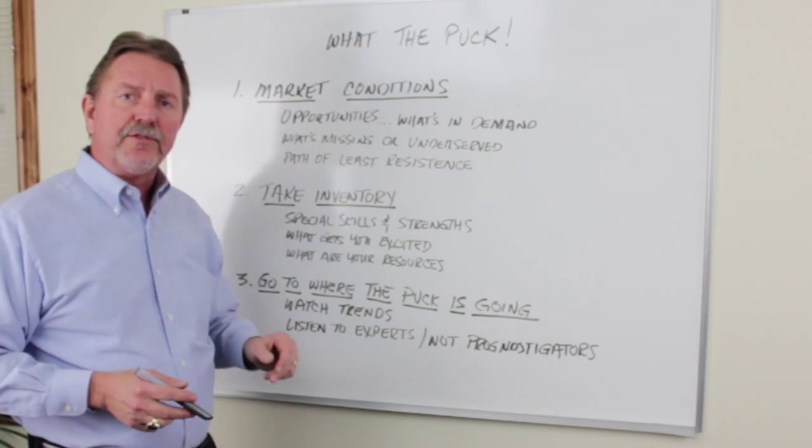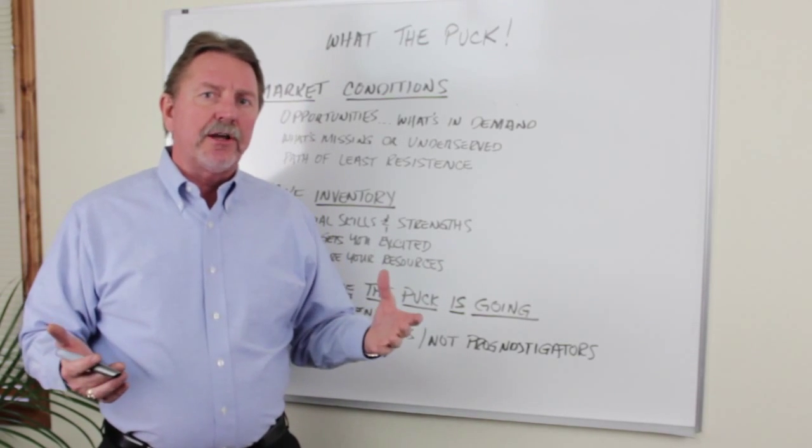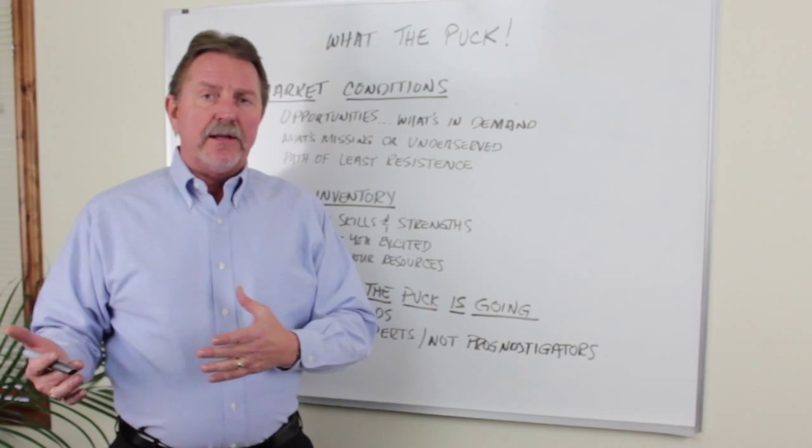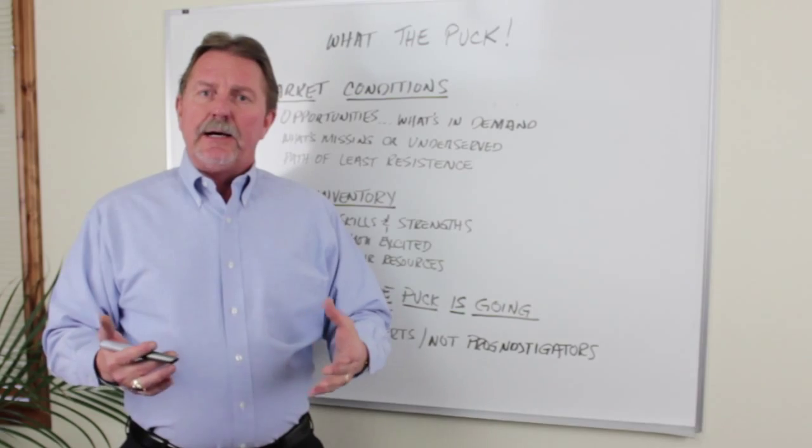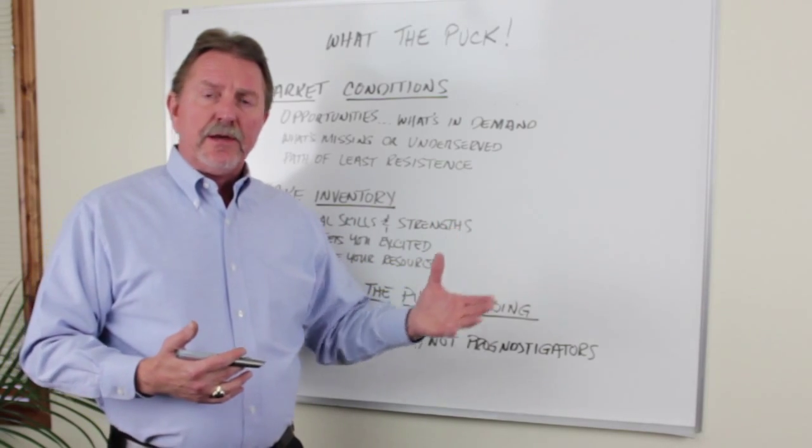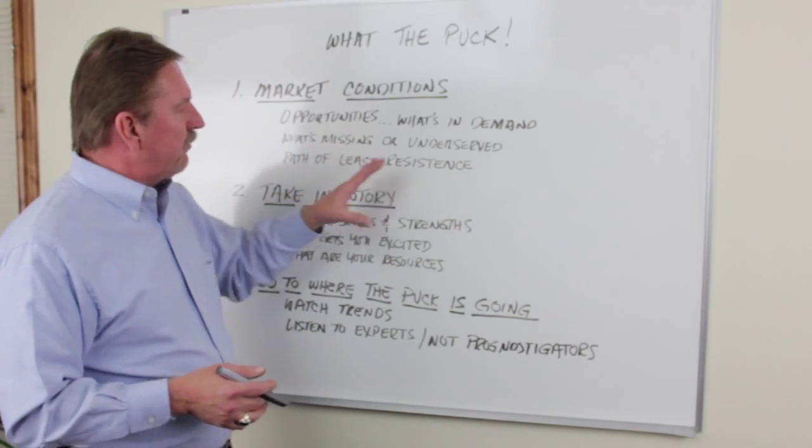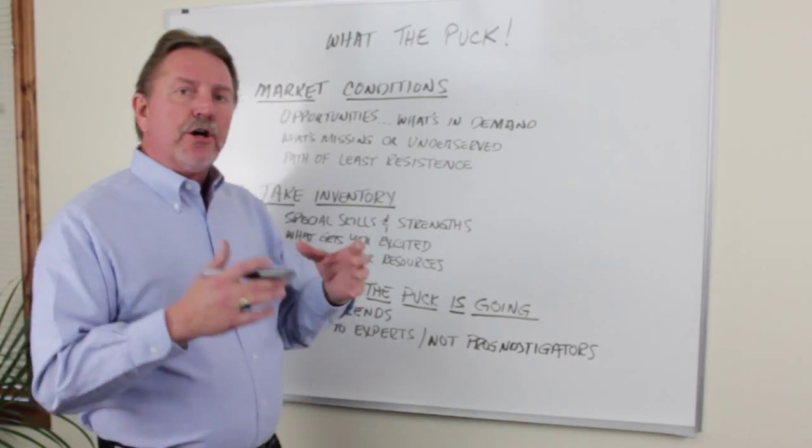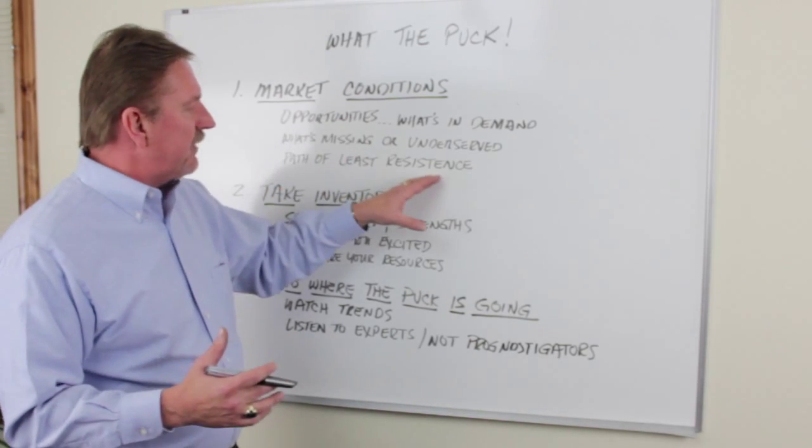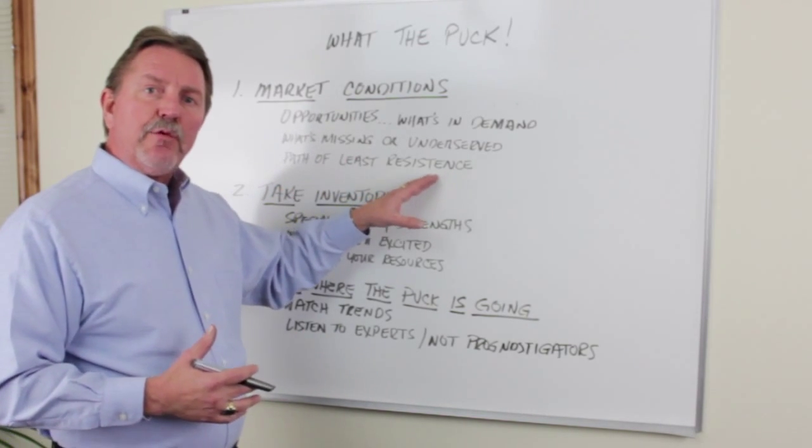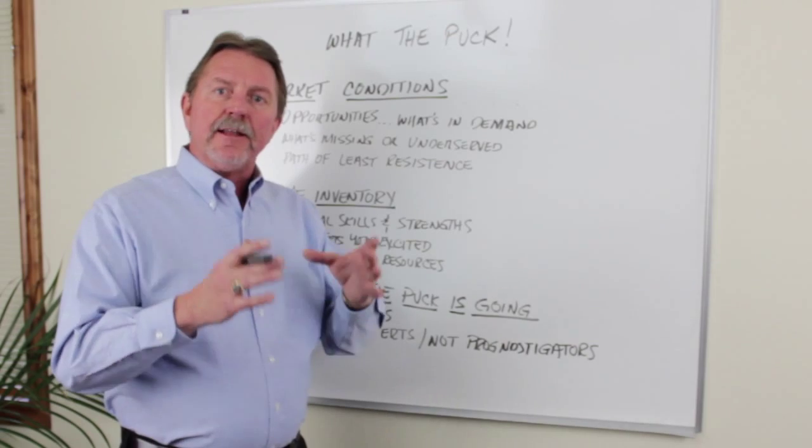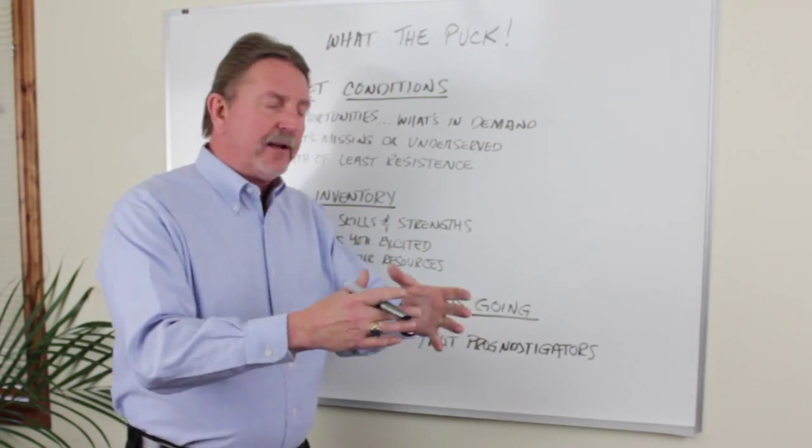What's missing or underserved? 30% of the market right now are investors. Many of them are cash buyers. That was an underserved part of the market. Now, not so much. Another area of the market that I think that's vastly underserved, non-owner occupies, out-of-town owners. Very few people work these markets. So kind of look and see what's missing, what's underserved. Don't do what everybody else is doing. Do something different. And then if you do these two things, you'll take the path of least resistance. You don't want to go with the crowd, do what the crowd is doing. You want to try to identify an area of the real estate market that other people haven't identified and then try to work that niche.